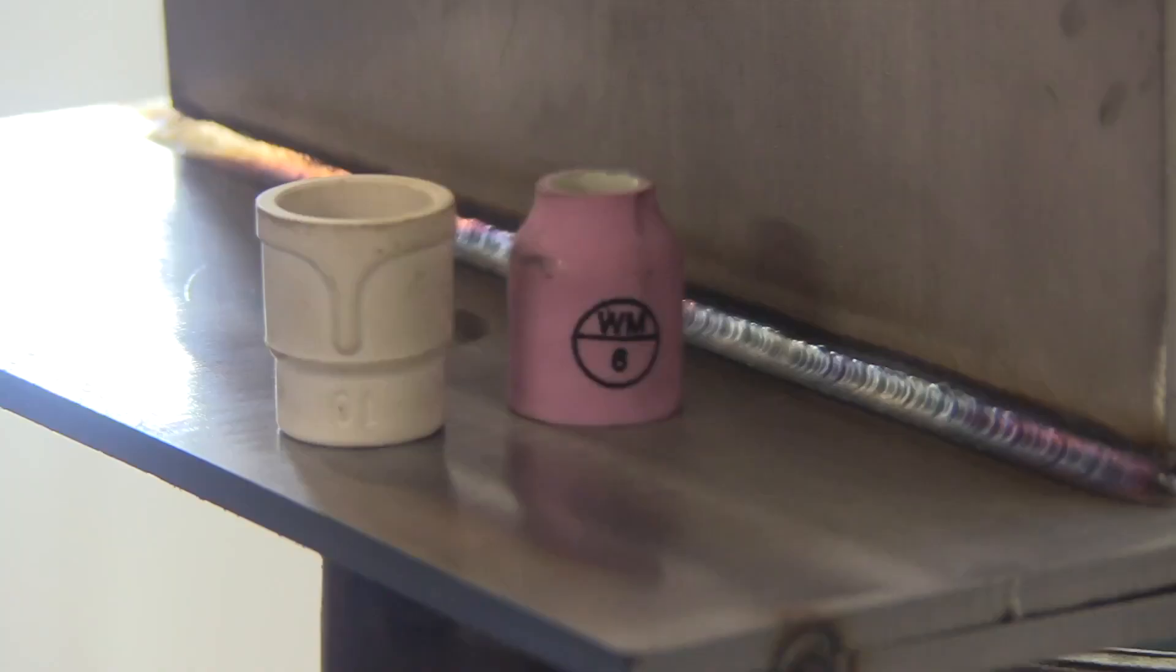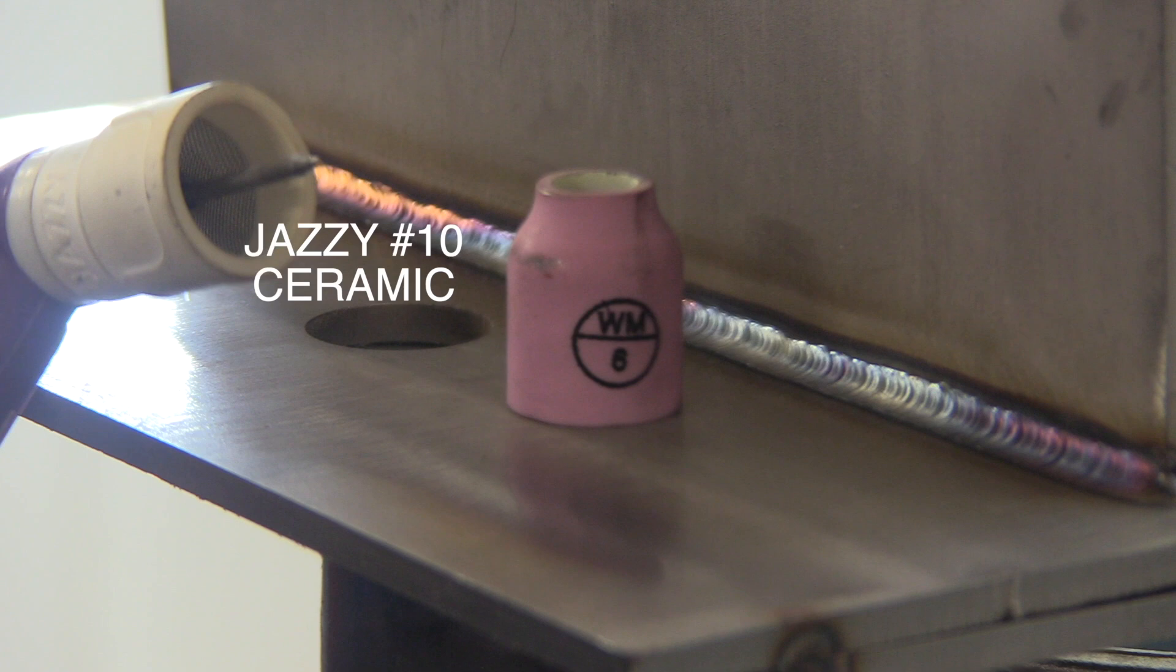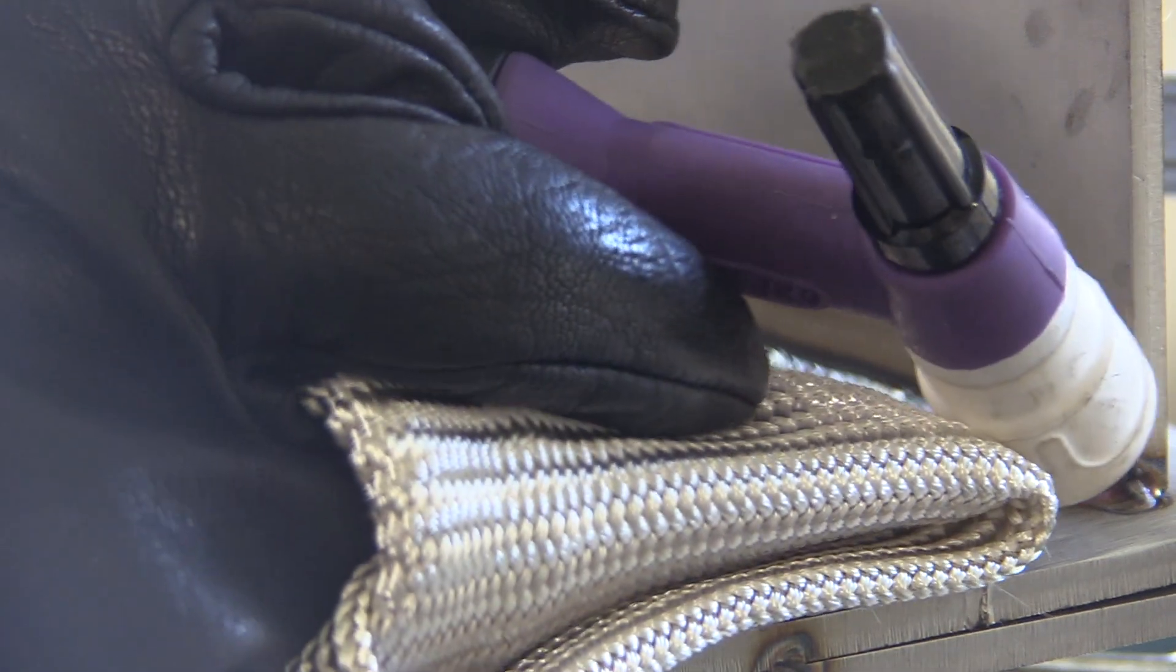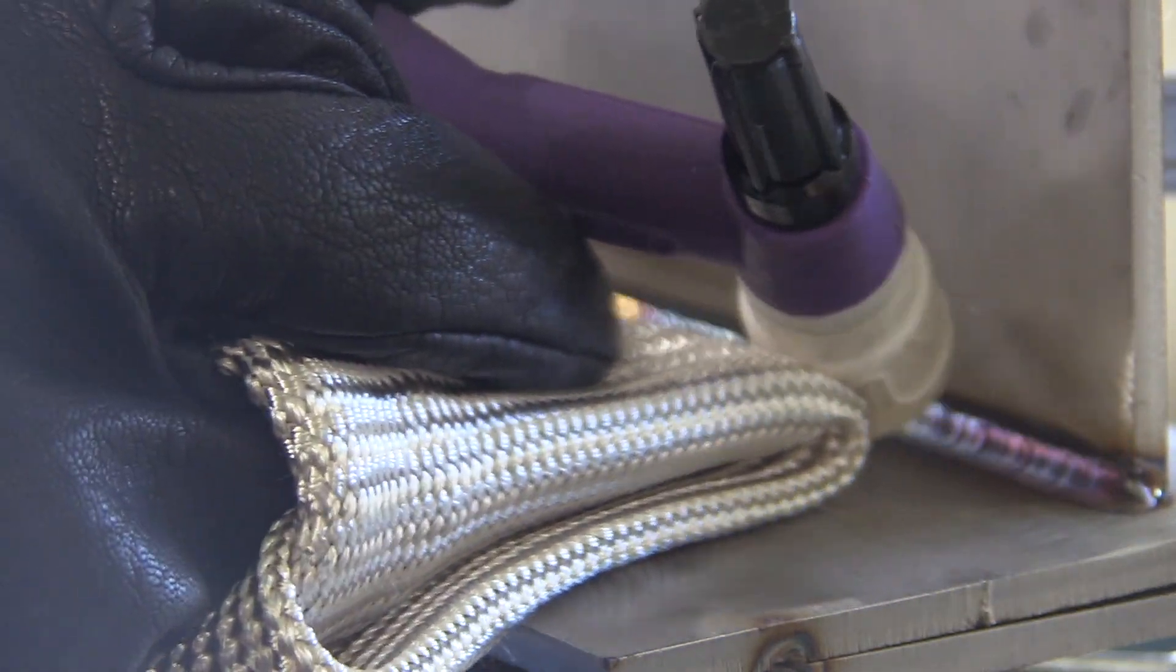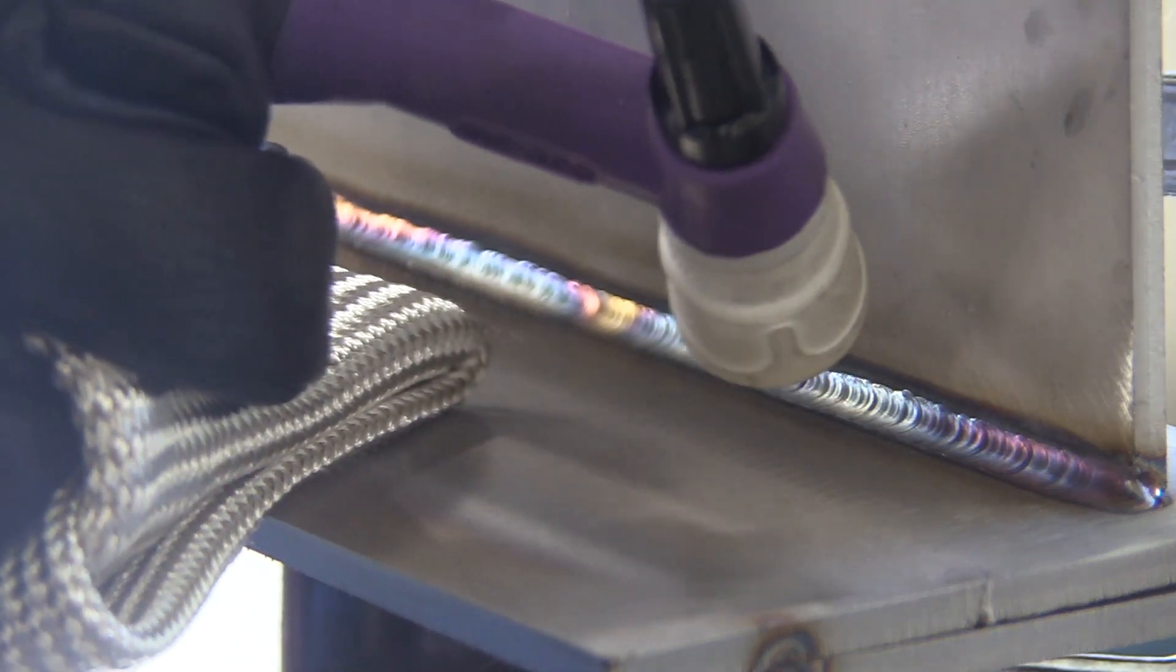I'm going to switch over now to a Jazzy 10 ceramic cup, one of my favorite all-around cups for stainless steel and chromoly and stuff like that. I'm going to be able to extend the electrode out plenty far where it gets it out of the way of the camera. We'll be able to see everything whether I'm freehanding or walking the cup.